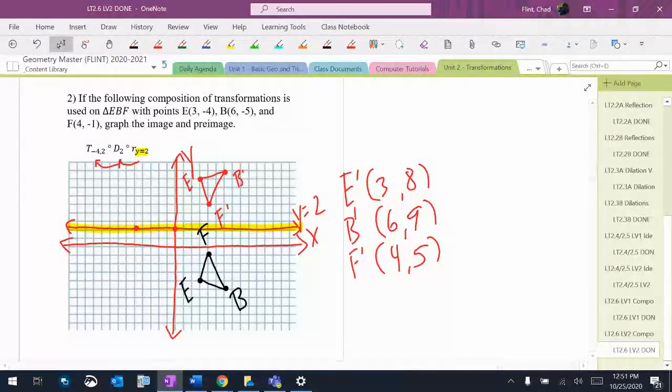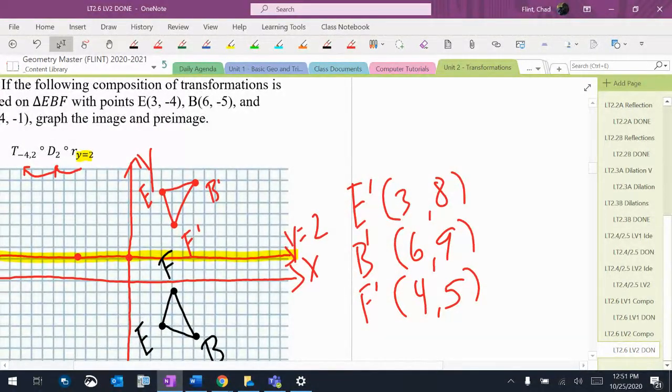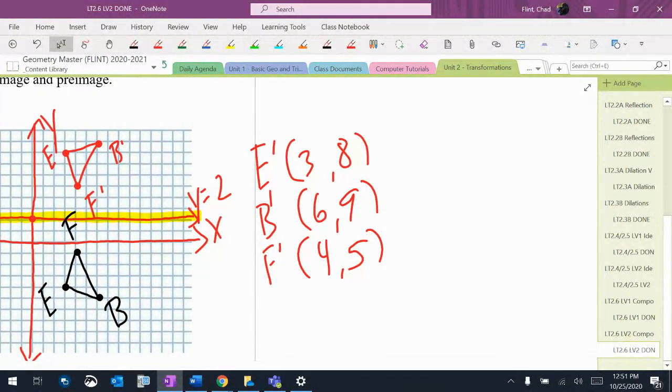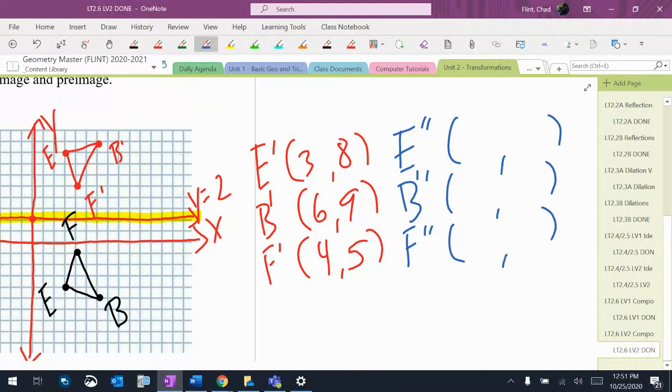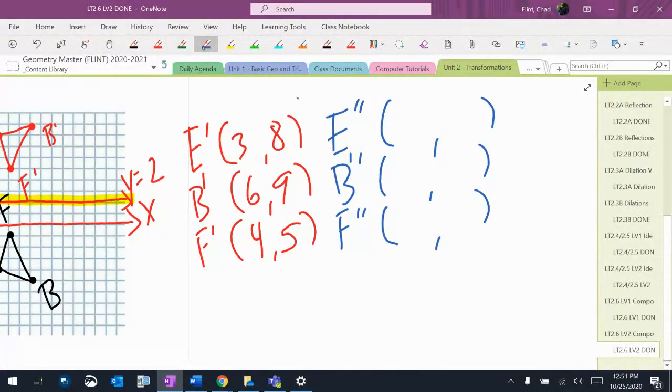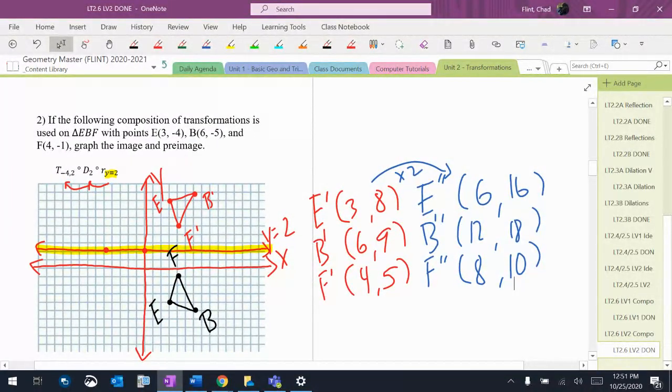Next thing I want you to do is the second transformation. Now we're going to be a little bit off the grid. So the new coordinates are going to be (6, 16), (12, 8), and (8, 10). So now almost all of those are going to go off the top of the graph significantly.